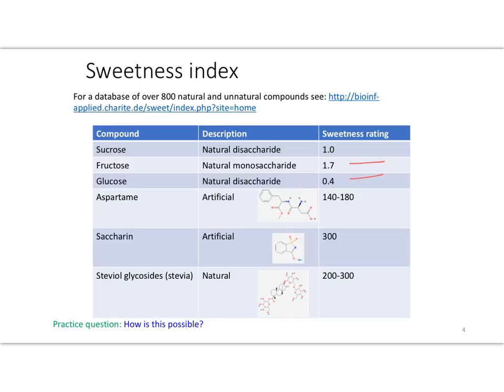There are many compounds that are quite a bit sweeter than sucrose. Obviously, the food industry is very interested in creating foods that taste sweet but don't give us as many calories. This table comes from a database of over 800 natural and unnatural compounds available at a referenced website. So the question is: how could so many very different types of compounds all taste sweet?